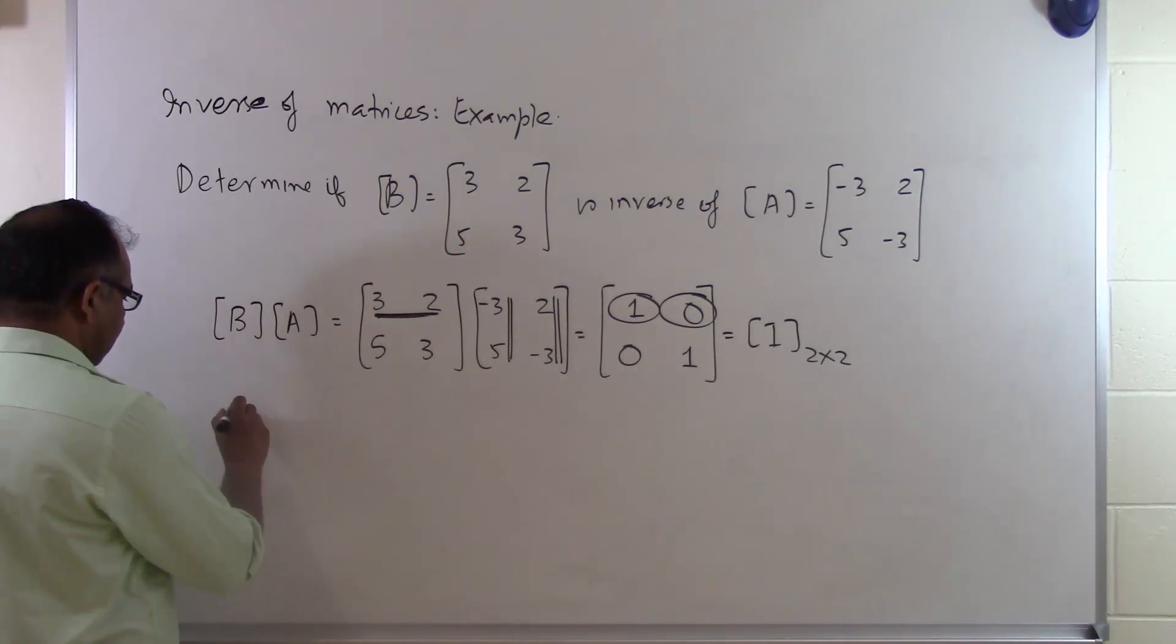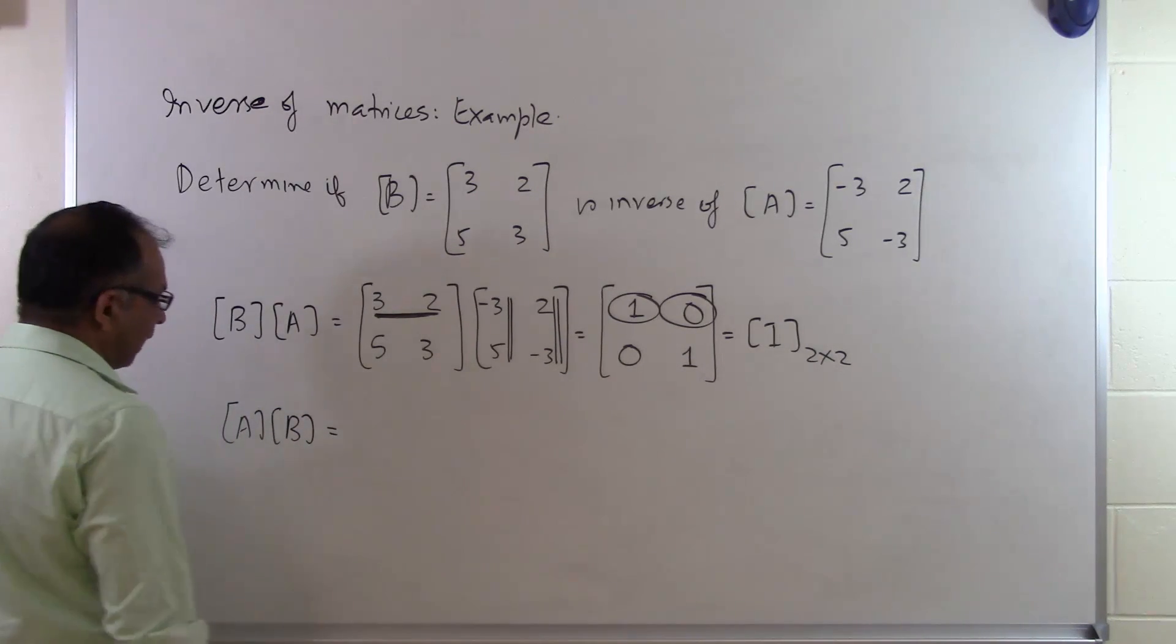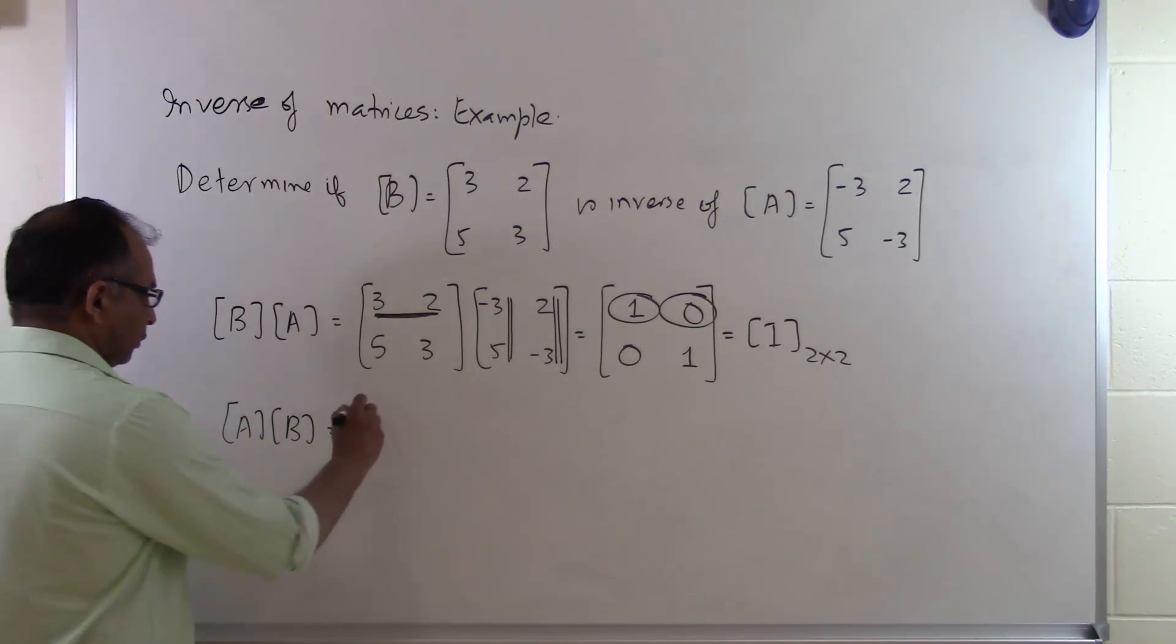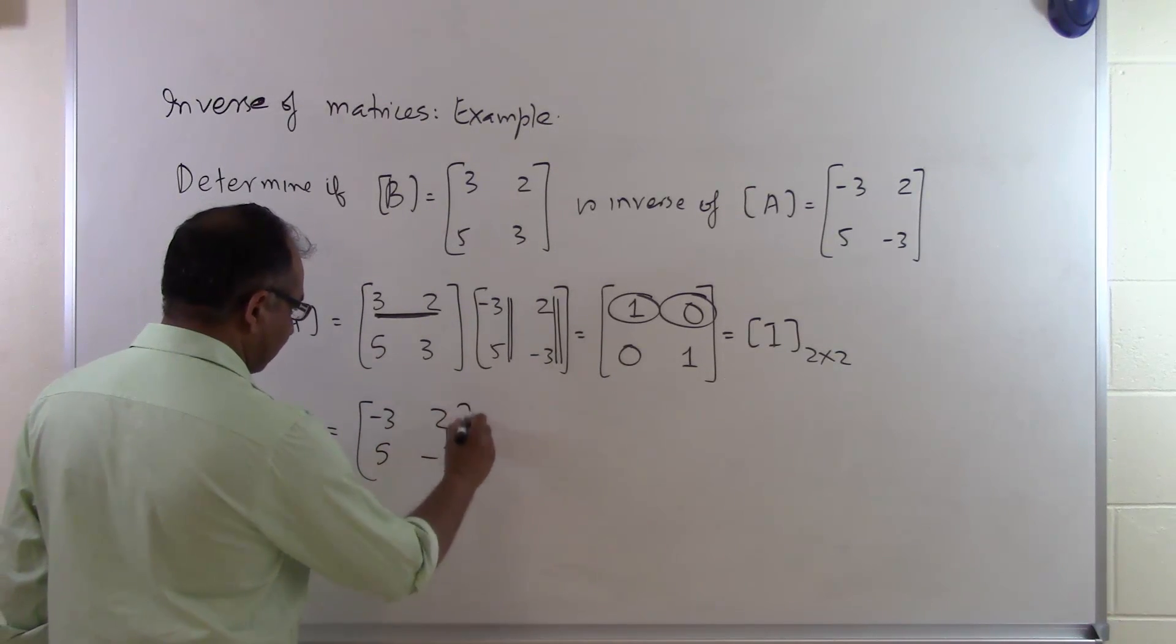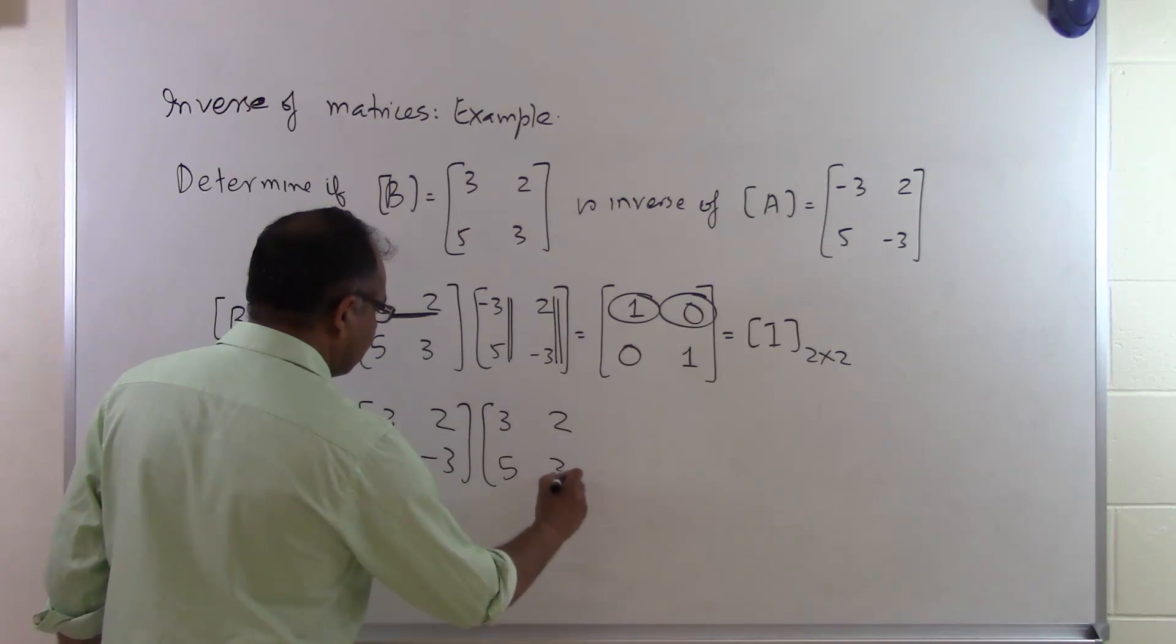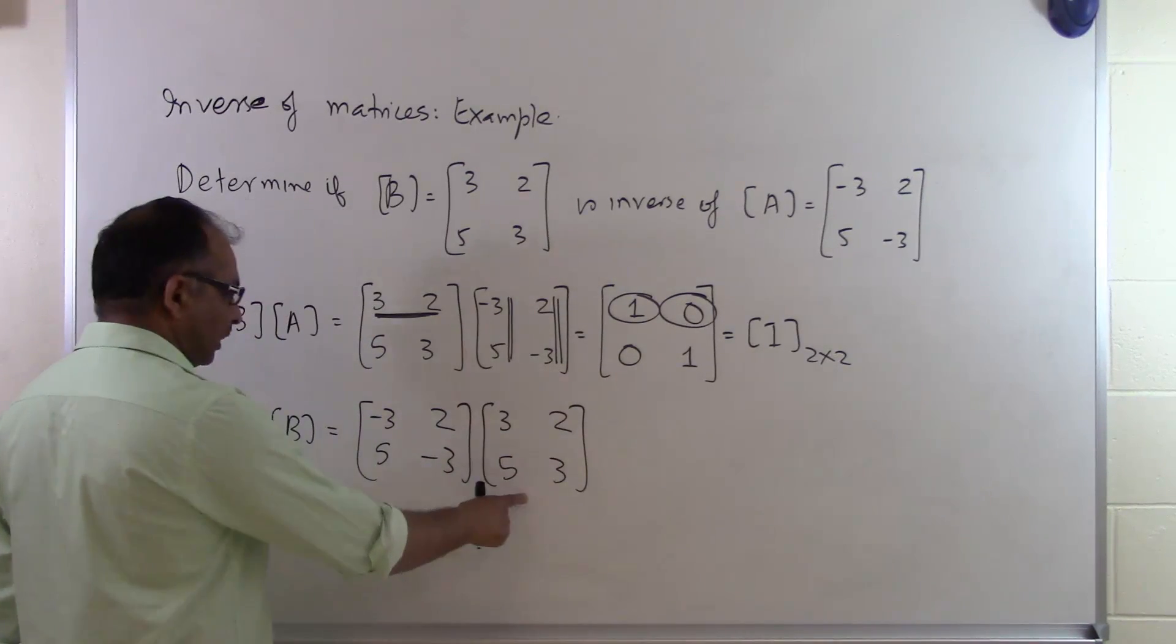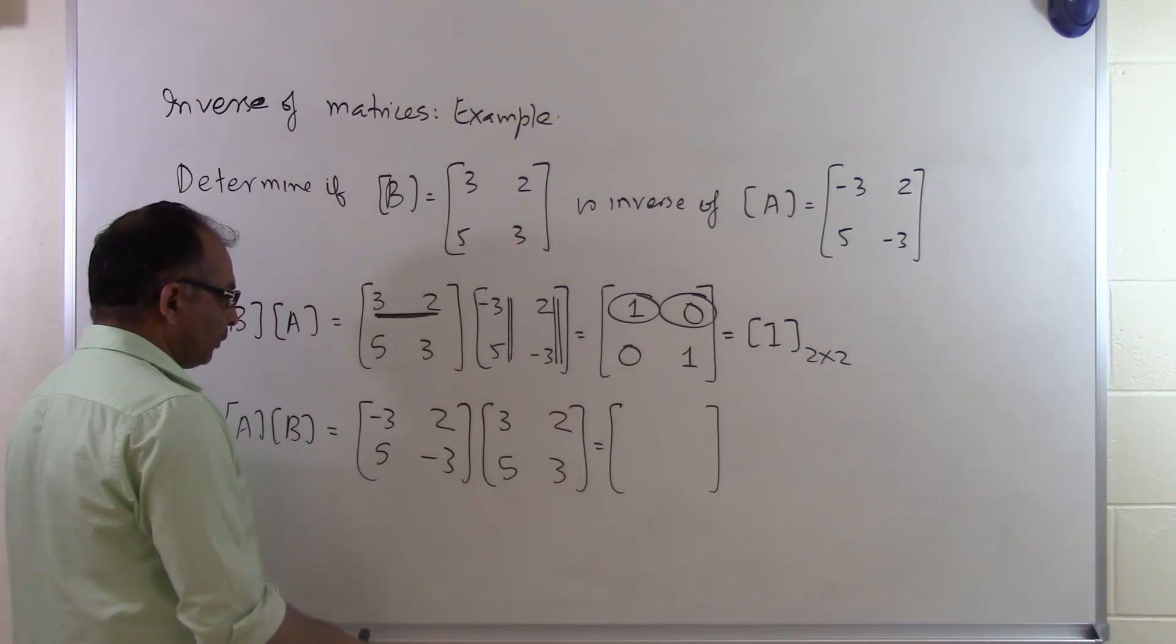I could have also done the problem by doing A times B. I didn't have to do B times A. So in that case I have minus 3 2 5 minus 3 multiplied by 3 2 5 3. That's my A and that's my B, and I could again follow the multiplication of 2 matrices.